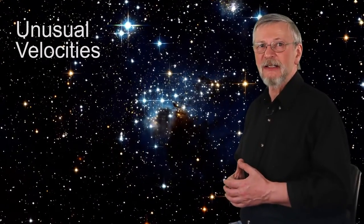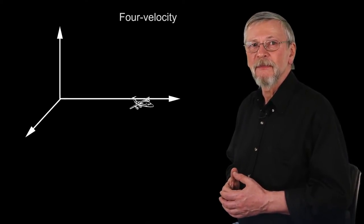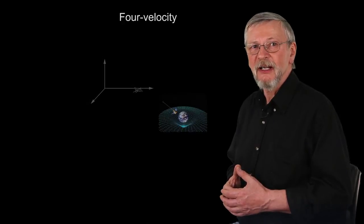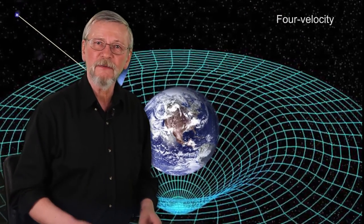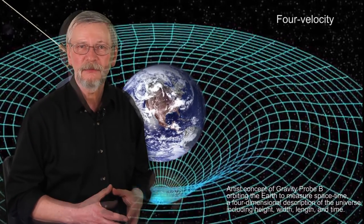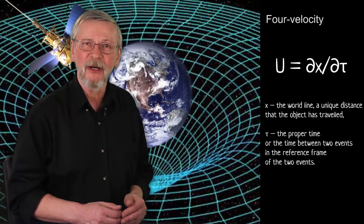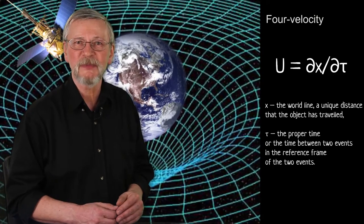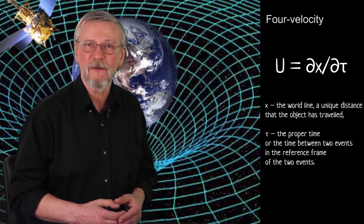Now let us discuss some unusual velocities. The classical velocity is a vector in three dimensions. In special and general relativity, velocity has an additional fourth dimension to be represented in spacetime. This velocity is often referred to as four-velocity. The four-velocity of an object changes in direction, but its value is constant at the speed of light c. The four-velocity is defined as follows: x represents the world line, a unique path that the object has traveled through four-dimensional spacetime, and tau is the proper time between two events in the reference frame of those events.